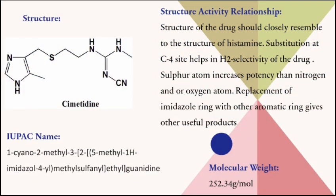Cimetidine is an H2 antagonist. The IUPAC name of Cimetidine is 1-cyano-2-methyl-3-[2-[(5-methyl-1H-imidazol-4-yl)methylthio]ethyl]guanidine.